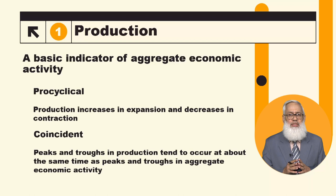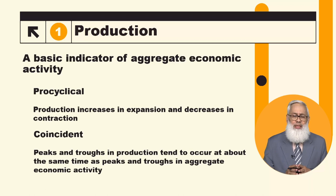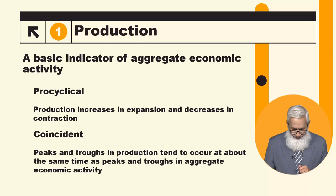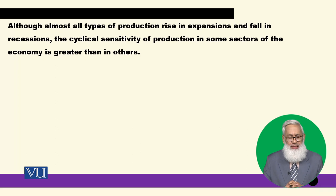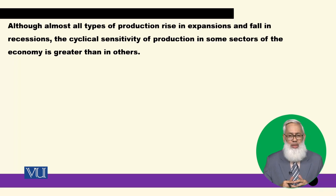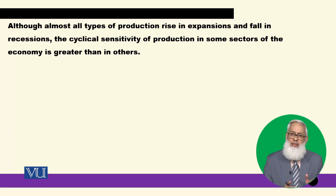Coincident means that the turning points of production variables align with the turning points of aggregate economic activity at the same time — peaks and troughs occur together. Although almost all types of production rise in expansion and fall in recession, the cyclical sensitivity of production in some sectors is greater than in others. Some production activities are relatively less pro-cyclical.